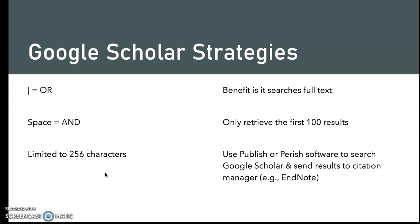I recommend Google Scholar as an addition to databases, but depending on what your professor has said your assignment is, if you choose to use Google Scholar, this is the way I suggest you do it. You only want to retrieve the first 100 results — that's the number I usually give for systematic reviews. However, if your teacher says you only need 20 or 50 results, then you can limit it to that.